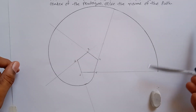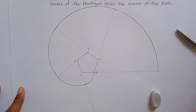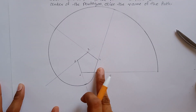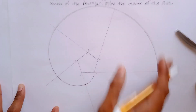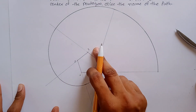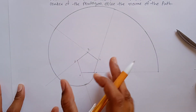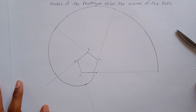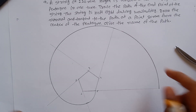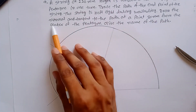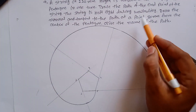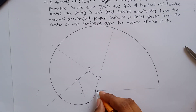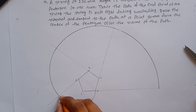This is how your involute works. This side is your string, and this is your pentagon. The whole string is wound around the pentagon, and if you unwind it, the procedure looks like this. Now they ask to draw the normal and tangent on the path from a point 80 mm from the center. Give this point the name P1.